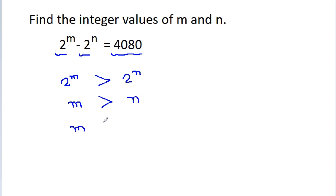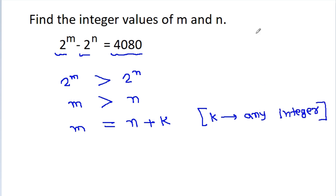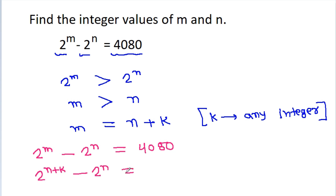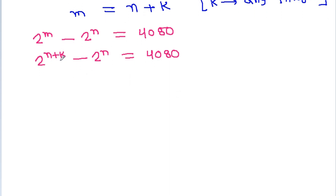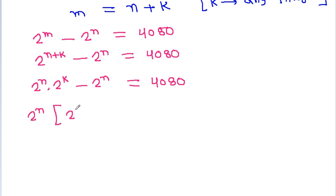So we can take m is equal to n plus k, where k is any integer. We have 2 power m minus 2 power n is equal to 4080, and substituting m as n plus k gives 2 power (n plus k) minus 2 power n is equal to 4080. This becomes 2 power n times 2 power k minus 2 power n equals 4080, and taking 2 power n common, we get 2 power n times (2 power k minus 1) is equal to 4080.